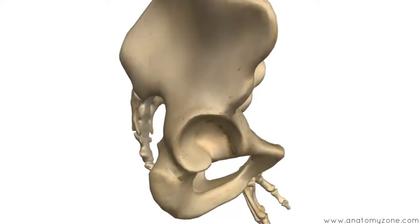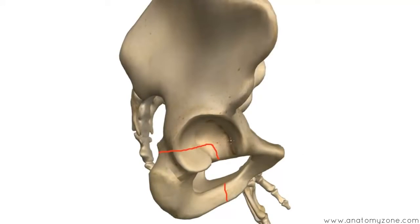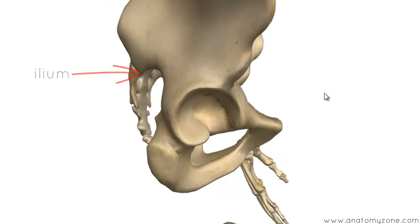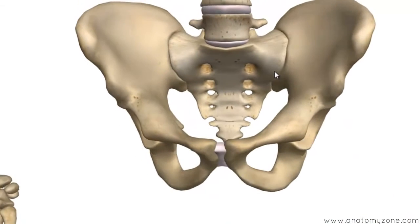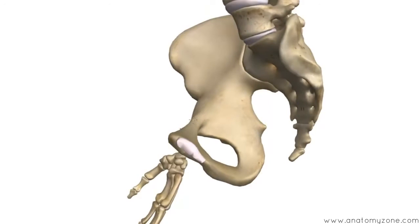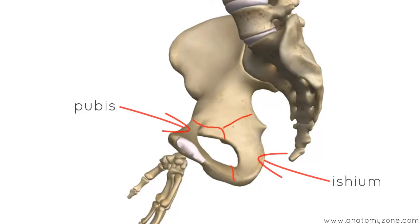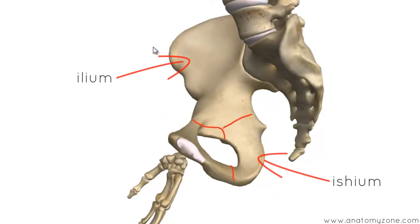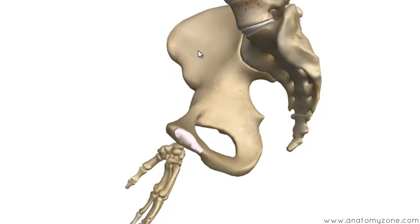Looking laterally at the hip, I'll show you where each part lies. The ischium is postero-inferior — this is posterior and this side is anterior. Anteriorly you've got the pubis, and above you've got the ilium. Rotating the model to a medial view: anteriorly we've got the pubis, posteriorly the ischium in this region, and above it the ilium. I'll talk through the features of the ilium, the ischium, and the pubis.